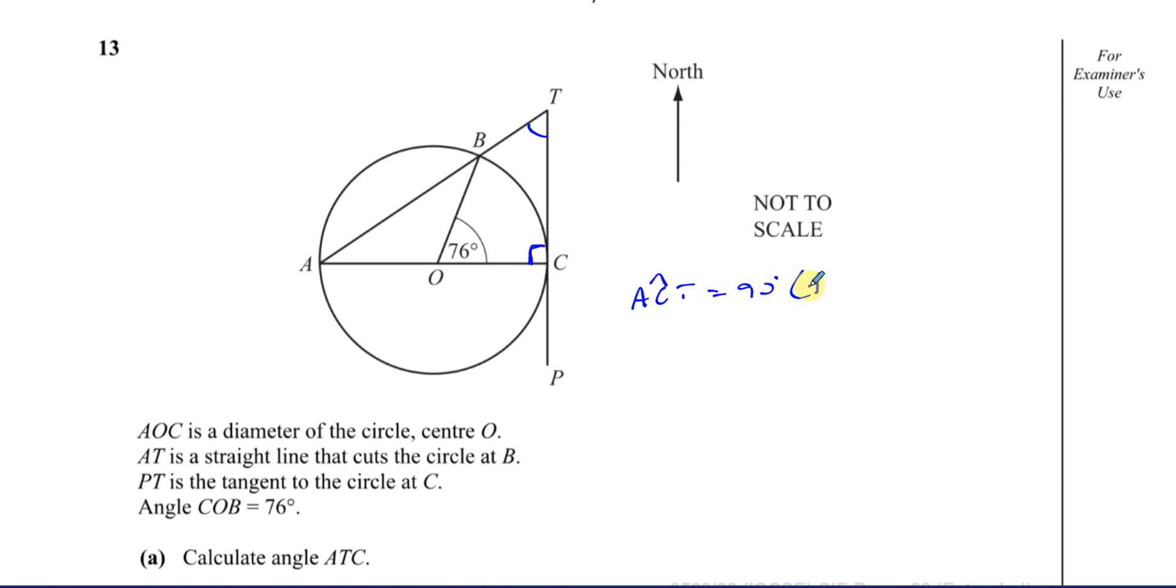We don't have to put the reasons, but I'll just put it in case some questions do ask you. You can just say tangent meets radius. That's good enough for a reason. So that's ACT, that's 90 degrees.